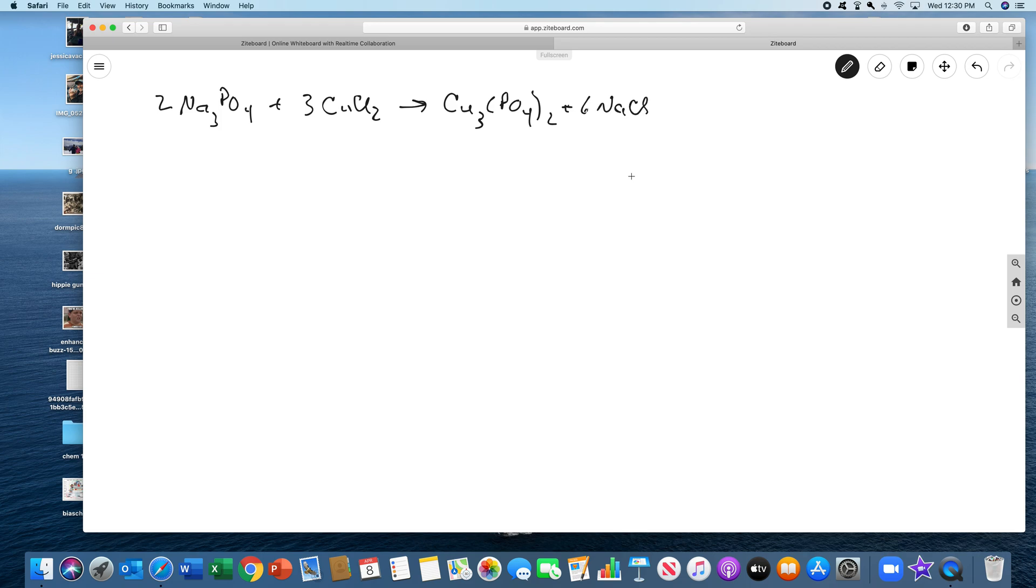For both part A and part B, this is the balanced chemical equation. A couple things from the lab manual background: everything here is soluble except for the copper phosphate. So the idea of this experiment is you're going to do this reaction and determine the copper phosphate stoichiometrically.